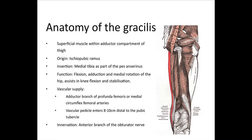Preservation of the neurovascular supply in perineal reconstruction prevents atrophy of the gracilis muscle over time. In the majority of cases, the muscle receives its blood supply from the adductor branch of the profunda femoris artery, although the contribution of the medial circumflex artery may predominate in some cases. The vascular pedicle is relatively consistent in its location, situated approximately 8 to 10 centimetres inferior to the pubic tubercle. The muscle is innervated by the anterior branch of the obturator nerve.